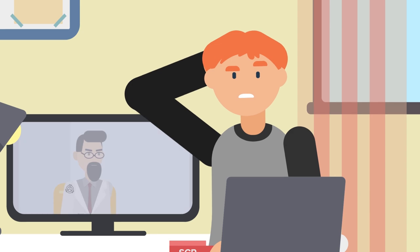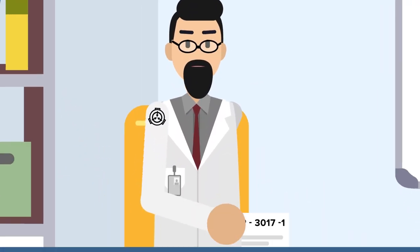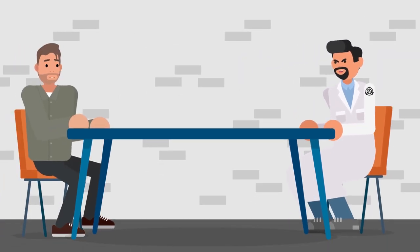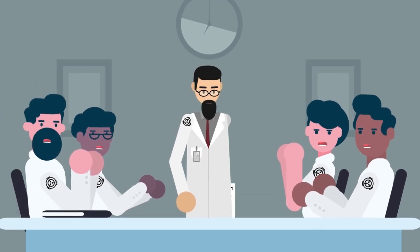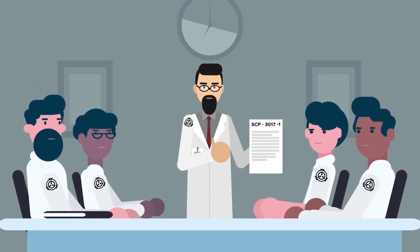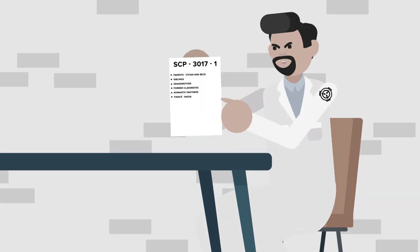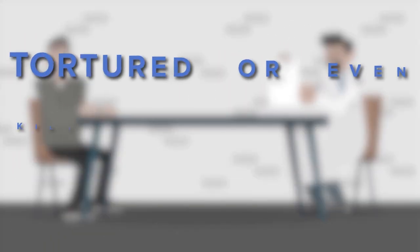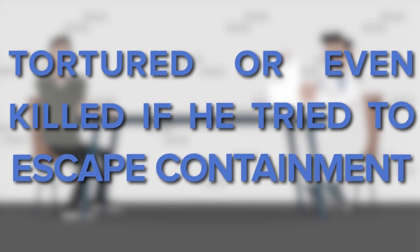But you might be wondering, how did the SCP Foundation use nothing more than a list of names to keep SCP-3017 caged? By threatening them, of course. Researchers who interviewed Frasier found that they could greatly decrease the secondary effect of his condition, making them far less compelled to free him. All it took was them to tell Frasier that his family, friends, fiancée would be captured, tortured, or even killed if he tried to escape containment.